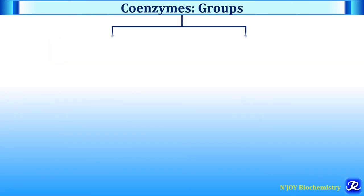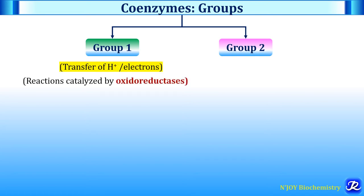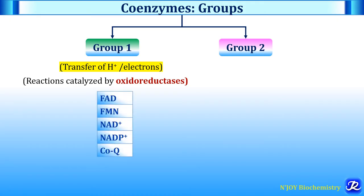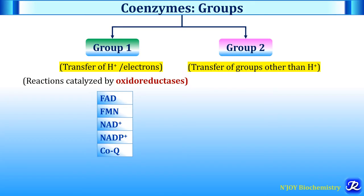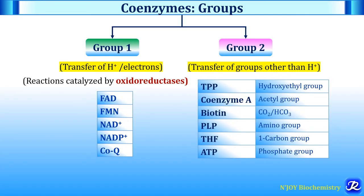Coenzymes can be divided into two groups. Group 1 coenzymes involve transfer of protons or electrons and are important for reactions catalyzed by oxidoreductases. Examples are FAD, FMN derived from riboflavin, NAD+, NADP+ derived from niacin, and coenzyme Q. Group 2 coenzymes transfer groups other than hydrogen or protons. Examples are thiamine pyrophosphate which transfers a hydroxyethyl group, coenzyme A which transfers acetyl group, biotin which transfers carbon dioxide or bicarbonate, PLP (pyridoxal phosphate) which transfers amino group, tetrahydrofolate which transfers one-carbon group, and ATP which transfers phosphate group.